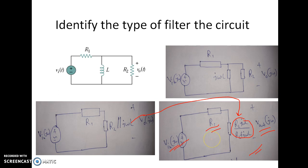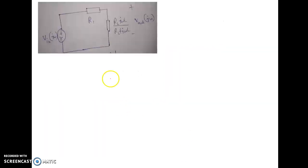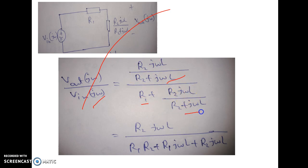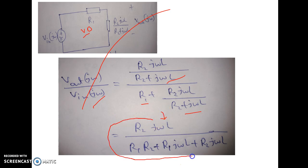We have to calculate the transfer function. The transfer function V output of jω divided by V input of jω equals R2·jωL divided by (R2 + jωL), all divided by R1 plus R2·jωL divided by (R2 + jωL). We have applied the voltage divider rule. Simplifying, the transfer function equals R2·jωL divided by (R1·R2 + R1·jωL + R2·jωL).